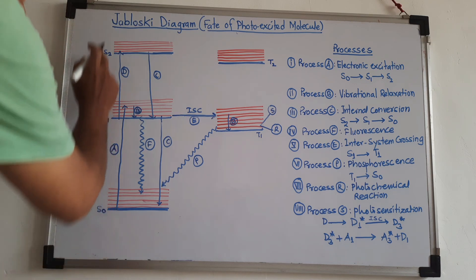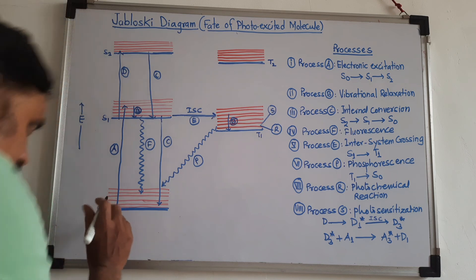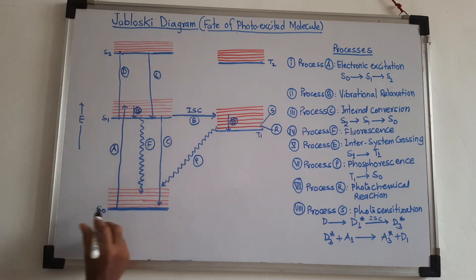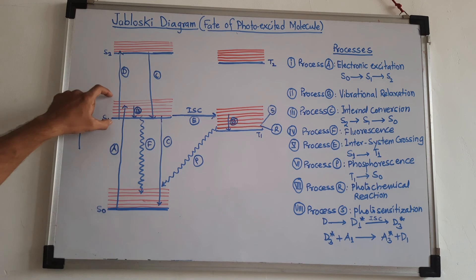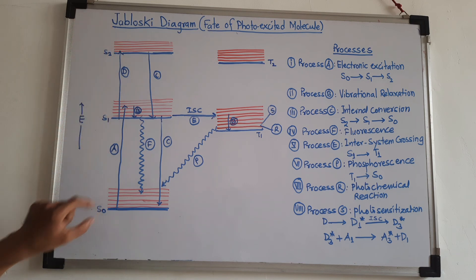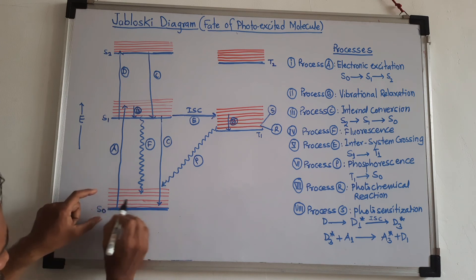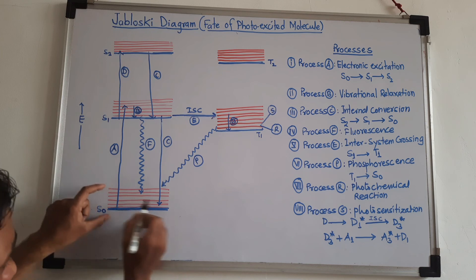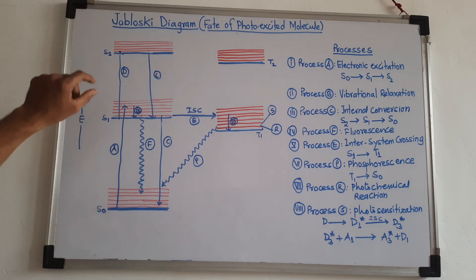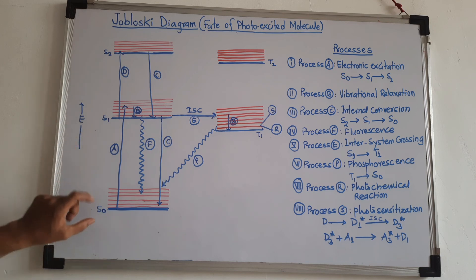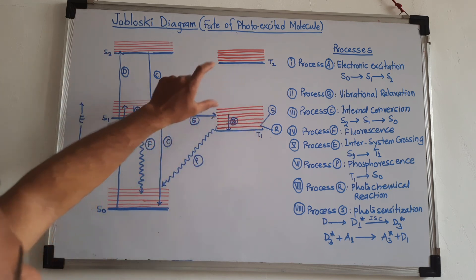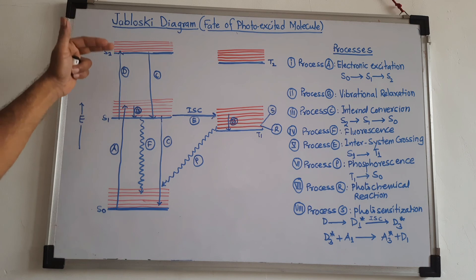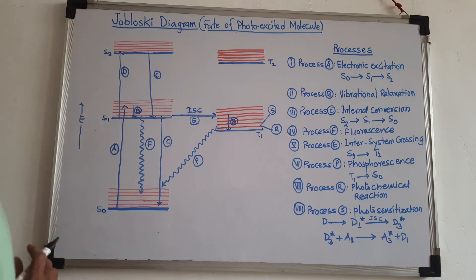These singlet excited states are shown in the diagram. Within each singlet excited state, vibrational energy levels are indicated with red lines. Between vibrational energy levels, we can also show rotational energy levels, but to avoid complication, I have skipped that part. So remember: S0, S1, S2 are singlet states, and T1 and T2 are triplet excited states. The red lines represent vibrational energy levels. Now we will start our discussion.